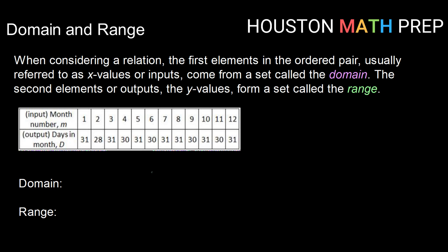So when we're considering a relation, remember that relations also include functions. The first element in the ordered pair, often called the x-value, sometimes called the input. If we took all of those x-values or all of those inputs, they form a set that we call the domain. So the domain is a set of all possible inputs.